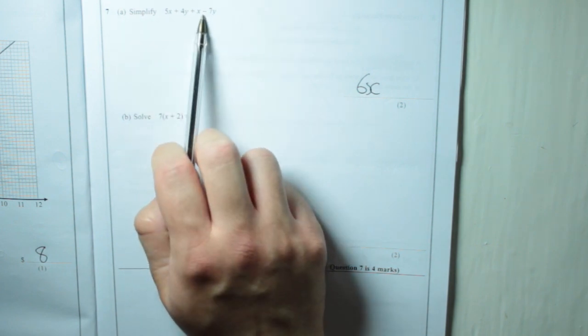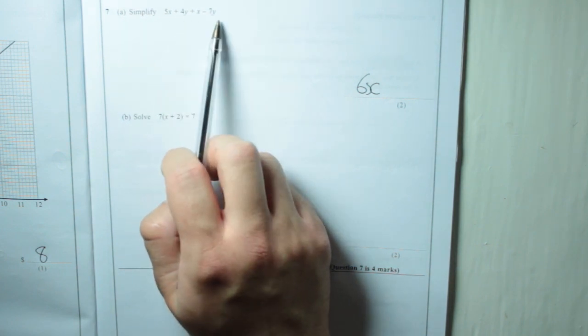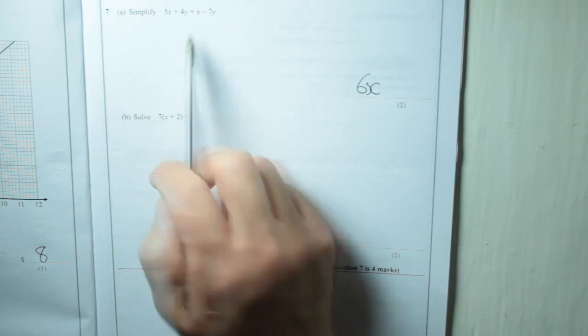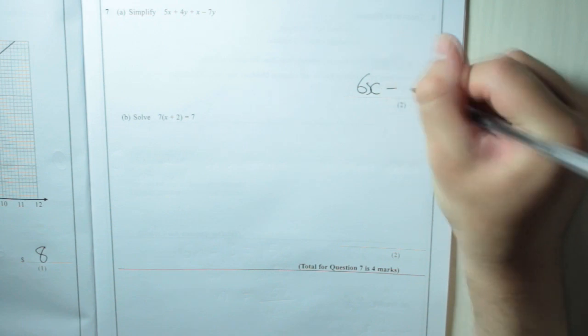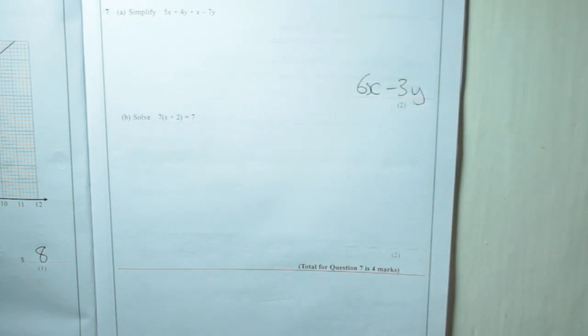4y take away 7y. Well, 4 take away 7 is minus 3, so you've got minus 3y. That's that question done.